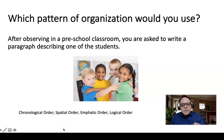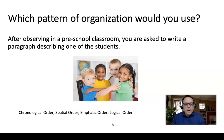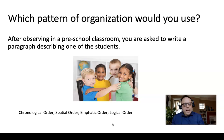I would say probably in this case, it might be best to use spatial order, because the instructor asked you to write a description. If you're describing a child in the classroom, you'd want to talk about their environment, what's around them, what kinds of things they're doing — are they moving, are they sitting? You might end up using transitions like 'at the front of the classroom, the teacher is doing an activity; some children are on the rug; this child was in the back.' Spatial order is probably the best bet for this one.